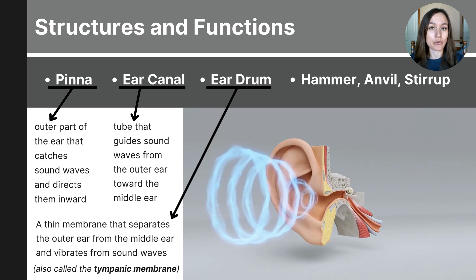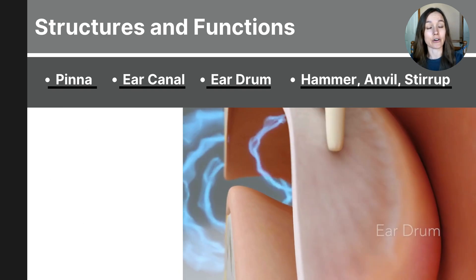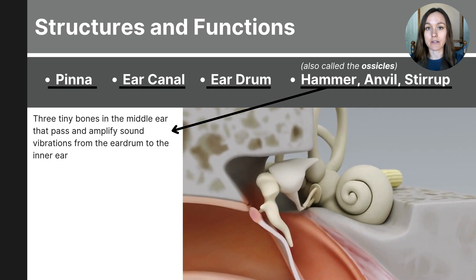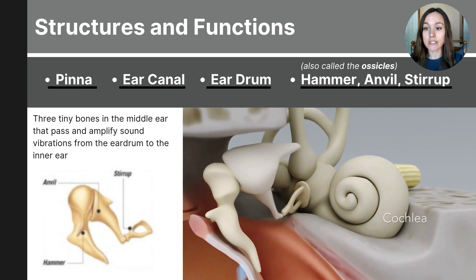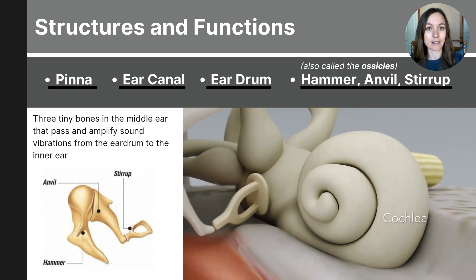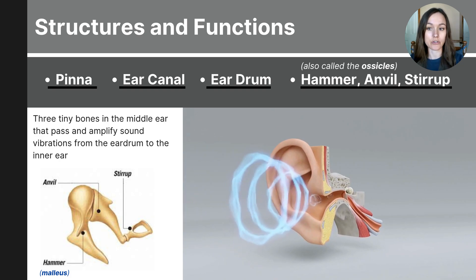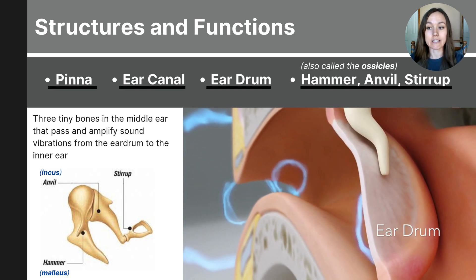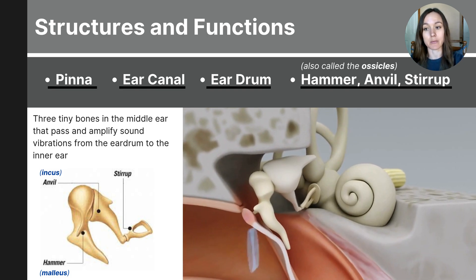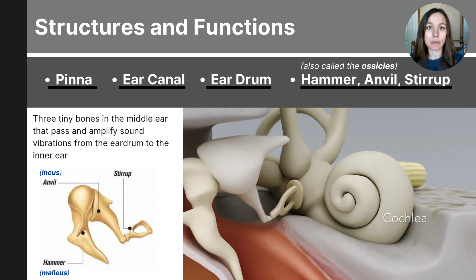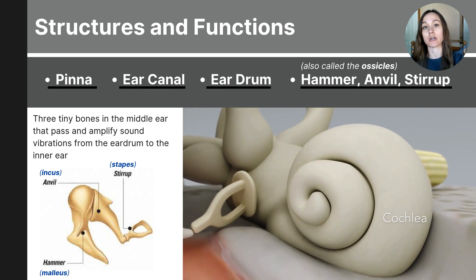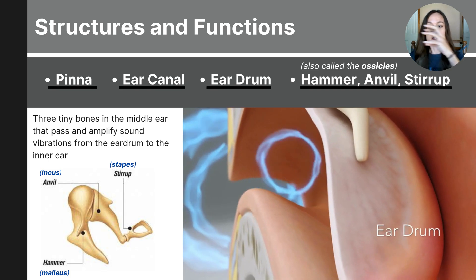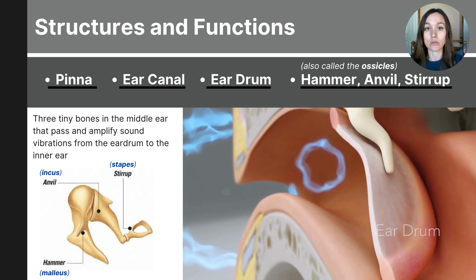Inside the middle ear are three tiny bones called together the ossicles. The vibrations of the eardrum are transferred to these tiny bones — they are called the anvil, the hammer, and the stirrup. The hammer, also referred to as the malleus, is attached to the eardrum and moves when the eardrum vibrates. The anvil, also called the incus, receives vibrations from the hammer and passes them to the stirrup. The stirrup, also called the stapes, transfers these vibrations to the oval window of the cochlea. This process has taken us from the outer ear to the middle ear, and on the next slide we'll continue the process into the inner ear.